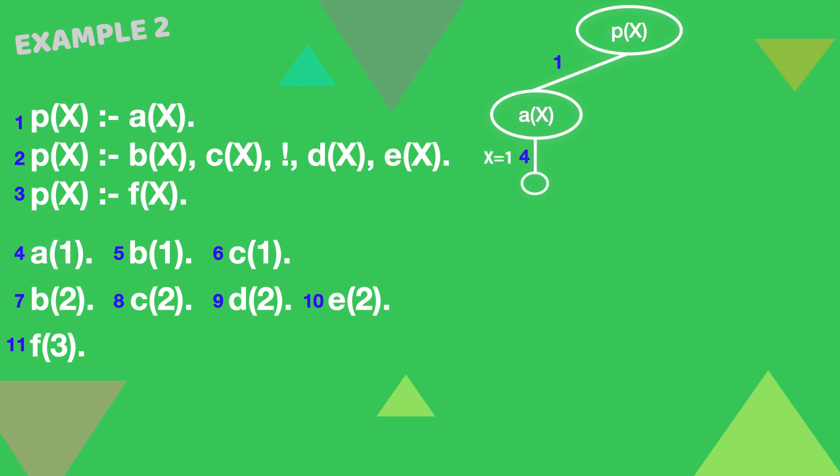If the user asks for more solutions, the place with other possibilities is the root node. Clause 2 is an alternative match that gives 5 sub-goals. Working from the left, b(X) matches clause 5, with one variable binding. And c(1) matches clause 6, as it is.